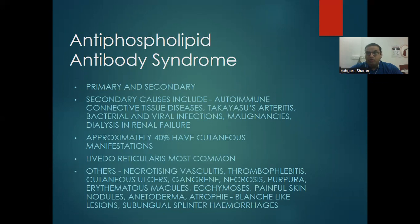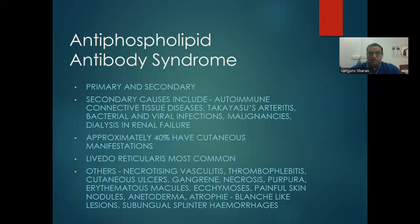Antiphospholipid antibody syndrome (APLA): primary and secondary forms. Secondary causes include autoimmune connective tissue disorders, Takayasu's arteritis, bacterial/viral infections, malignancies, and renal failure/dialysis. Forty percent of patients have cutaneous lesions. Most common is livedo reticularis. Other lesions include necrotizing vasculitis, thrombophlebitis, cutaneous ulcers leading to gangrene, necrosis, purpura, erythematous macules, acne-like lesions, painful skin nodules, anetoderma, atrophy, plaque-like lesions, and subungual splinter hemorrhages.